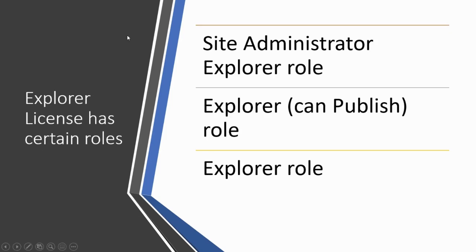Next we have Explorer licenses. In Explorer, we have the Site Administrator Explorer role and the Explorer Can Publish role, and the Explorer role. In this video I'll be walking you through the Explorer Can Publish and Explorer roles. Let me know in the comments if you'd like to know more about the Site Administrator Explorer role. Next comes the Viewer license, which has just one role: Viewer.